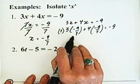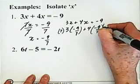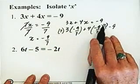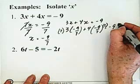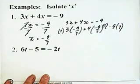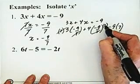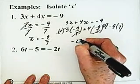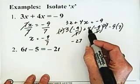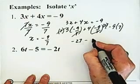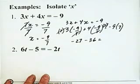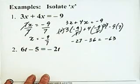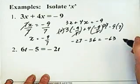I'm going to multiply this term by 7 and this term by 7, so I must also multiply my minus 9 by 7. Here my 7's cancel, and here my 7's cancel. I'm left with 3 times minus 9, which is minus 27, and 4 times minus 9, which is minus 36. And minus 9 times 7 is minus 63. Fortunately, minus 27 and minus 36 add up to minus 63, so we have the correct answer.